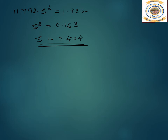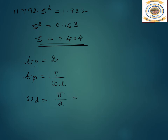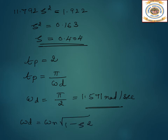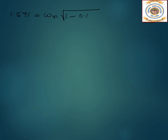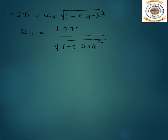Given tp = 2 seconds, using tp = π/ωd: ωd = π/2 = 1.571 rad/s. Since ωd = ωₙ√(1−ζ²): 1.571 = ωₙ√(1−0.404²). Solving: ωₙ = 1.571/√(1−0.163) = 1.717 rad/s.